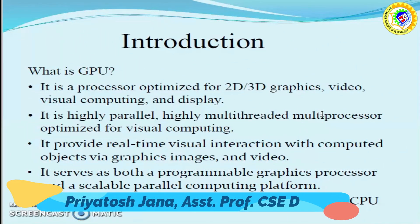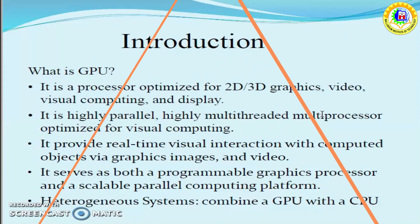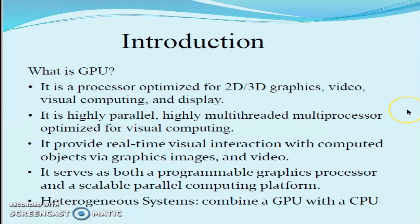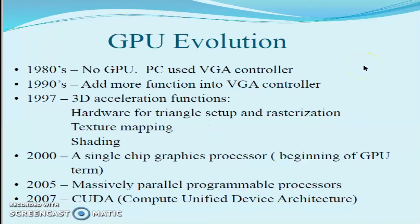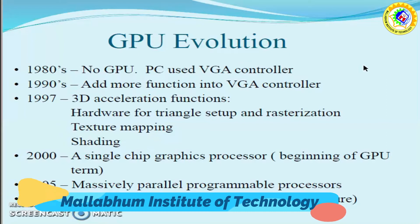It provides real-time visual interaction with computed objects via graphics, images, and videos. It serves as both a programmable graphics processor and a scalable parallel computing platform. These are heterogeneous systems that combine GPU with CPU. Now let's look at GPU evolution.